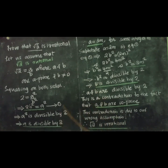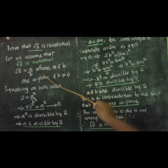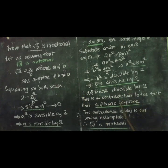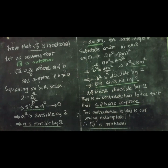Here we got a is divisible by 2, and here we got b is divisible by 2. So we got a common factor for a and b — both a and b are divisible by 2. But we assumed root 2 is rational and wrote root 2 equal to a by b where a and b are coprime, meaning there is no common factor. We assumed a and b have no common factor, but we proved a and b have a common factor of 2. We got a contradiction. This contradiction is due to our wrong assumption that root 2 is rational. Therefore, root 2 is irrational.